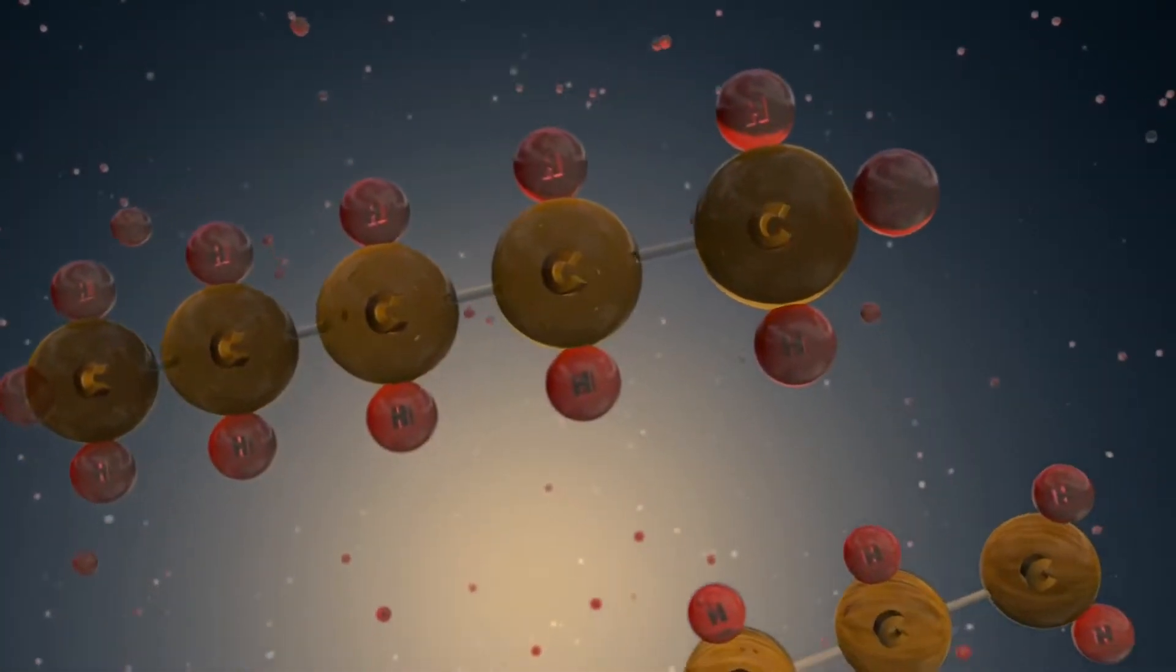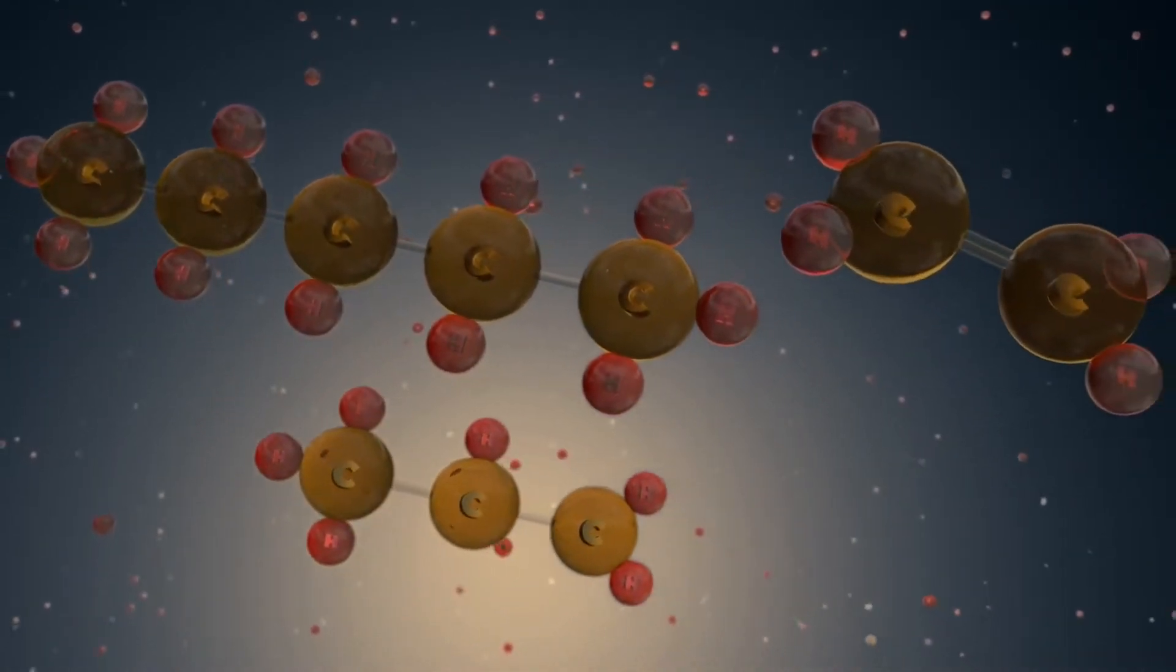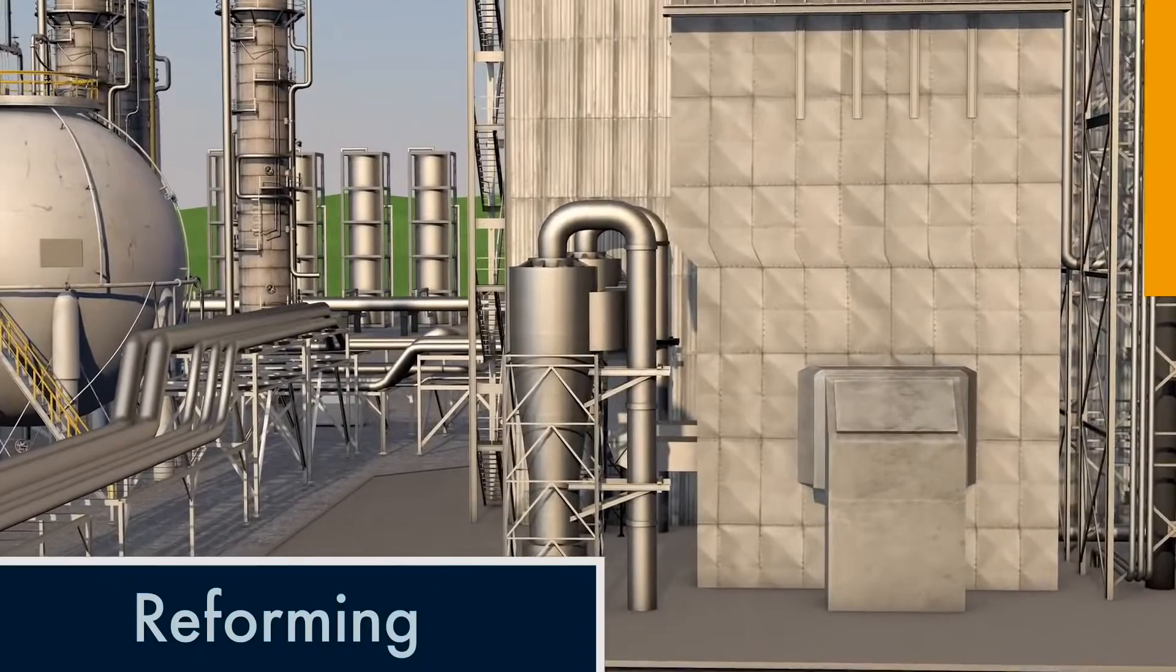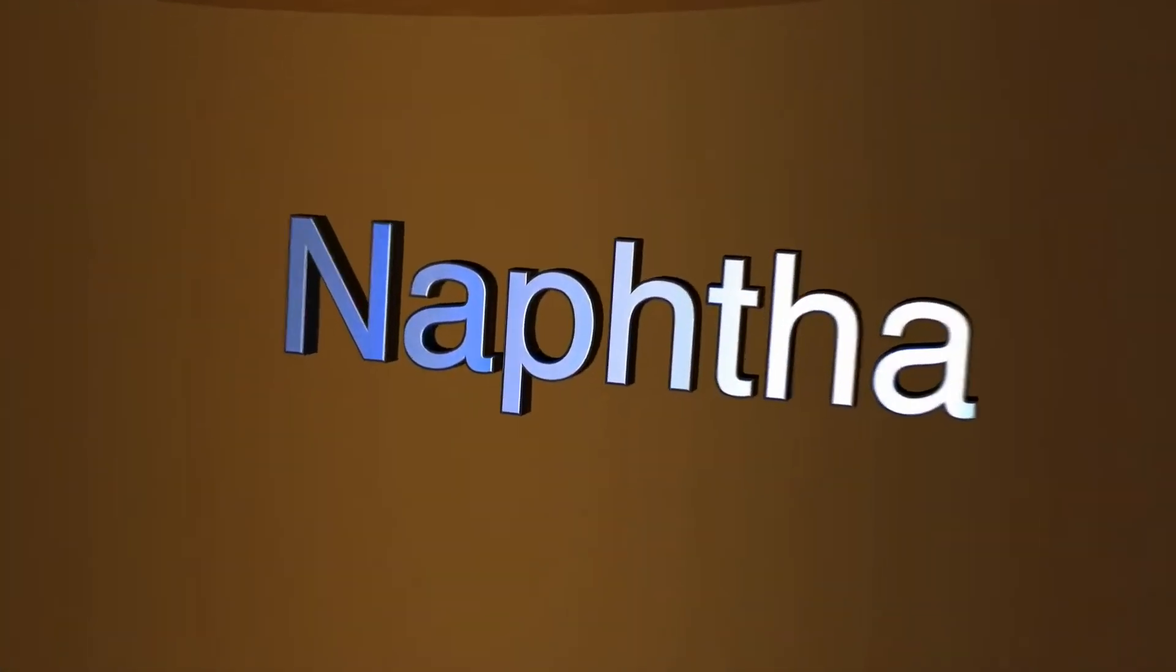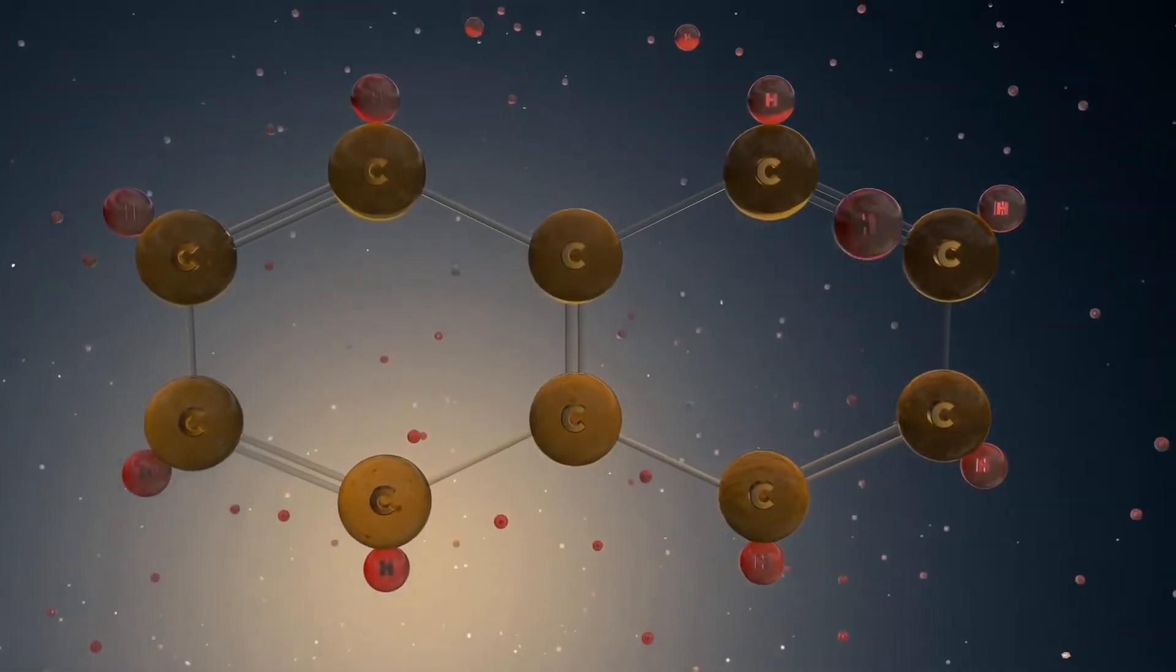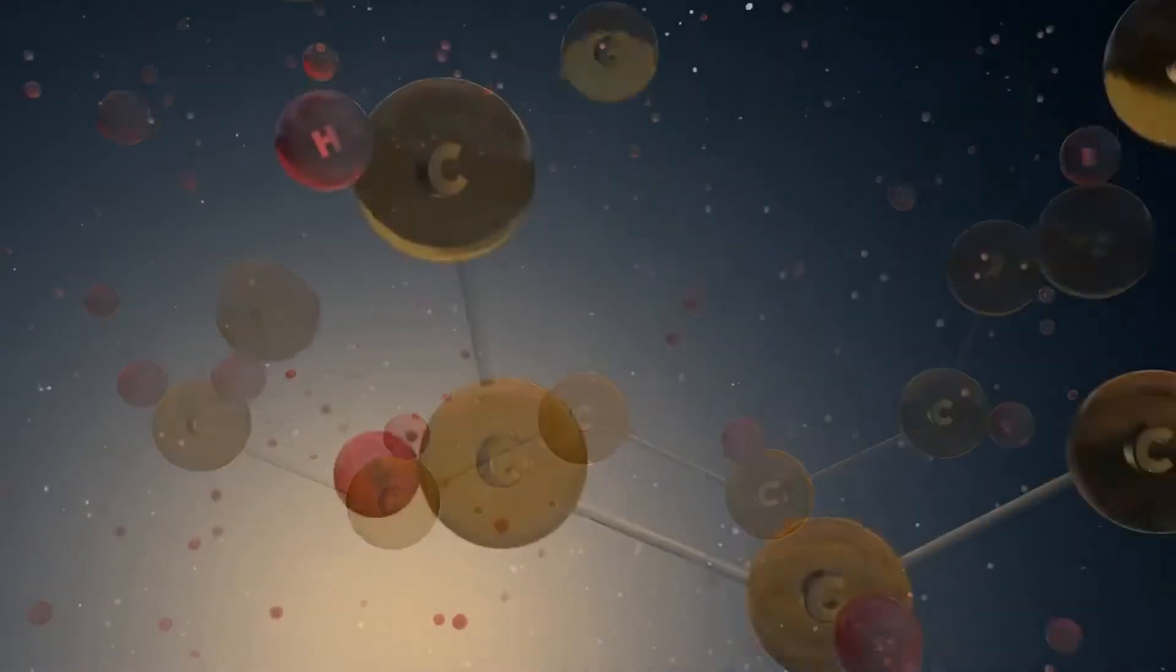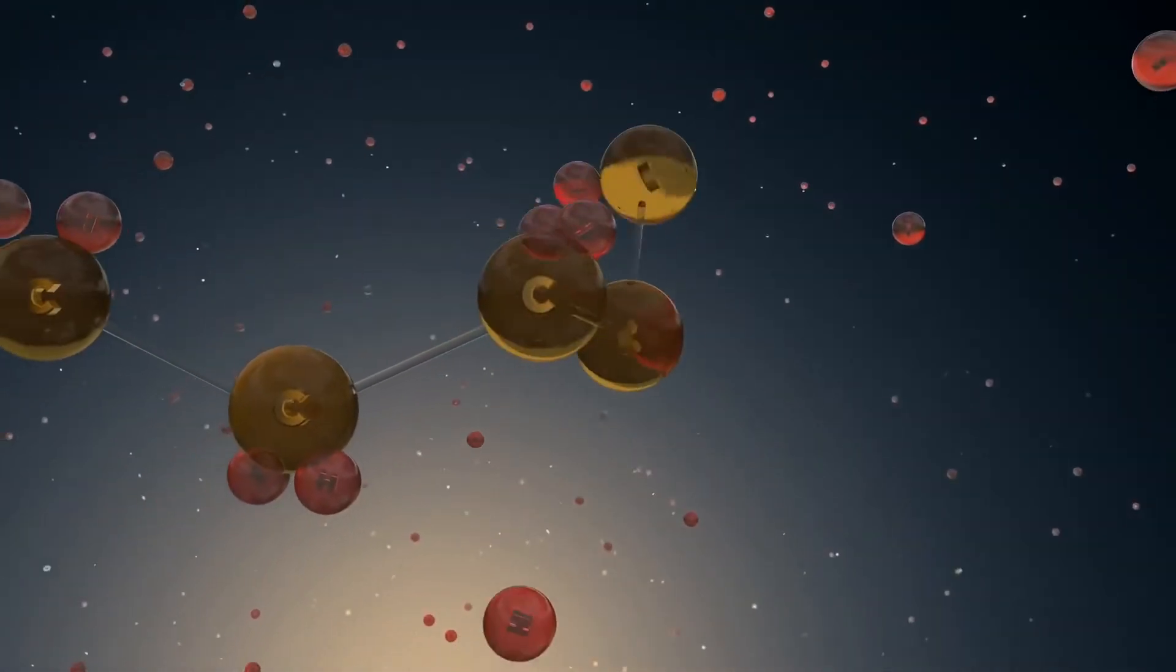Reforming is a process that increases the amount of gasoline produced from crude oil. One of the products separated in the distilling process is a liquid called naphtha. The number of carbon atoms in naphtha is about the same as the number found in gasoline, but their structure is more complex. Reforming rearranges the naphtha molecule, turning it into a usable gasoline-like molecule.